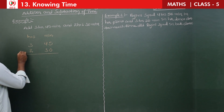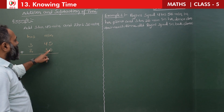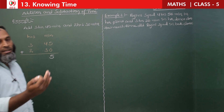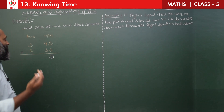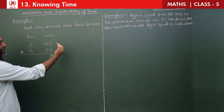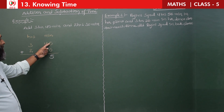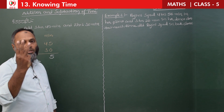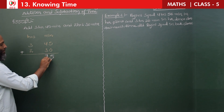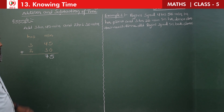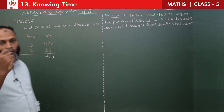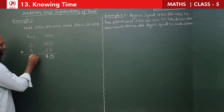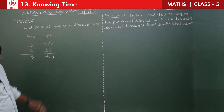Starting from the minutes column: 5 plus 0 is 5, and 4 plus 3 is 7, giving 75 minutes. Then in the hours column: 3 plus 2 is 5. So we get 5 hours 75 minutes. But in the minutes, we have more than 60, so we need to convert.